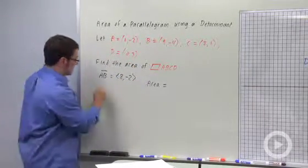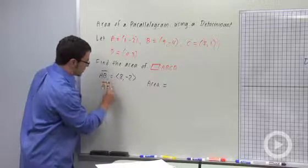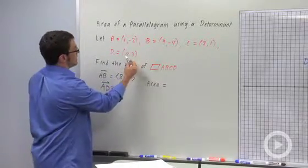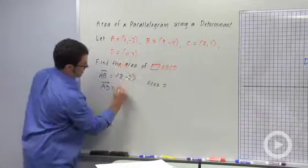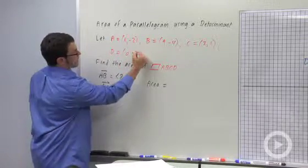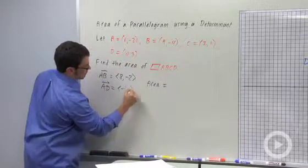And AD goes from point A to point D, and so its components are going to be 0 minus 1, which is negative 1, and 3 minus negative 2, which is 5.